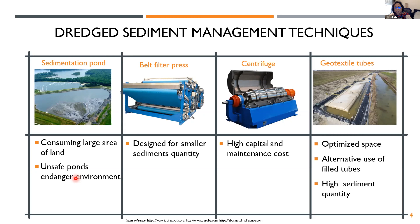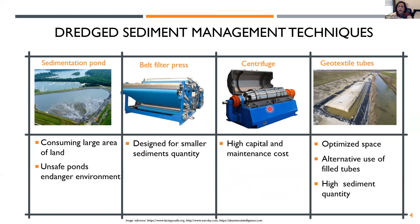The next two methods are belt press and centrifuge — mechanical ways to dewater sediments or slurries. These are used commonly for small projects, more like factory-kind operations. The paper industry still uses these methods. They require large capital cost and constant maintenance and energy, so they are not inexpensive.